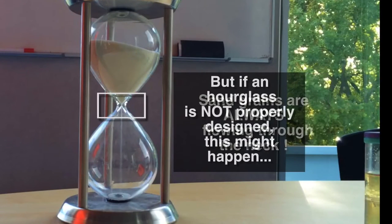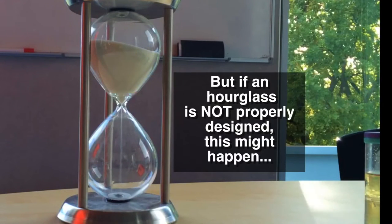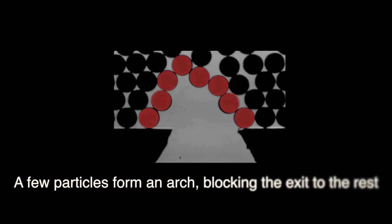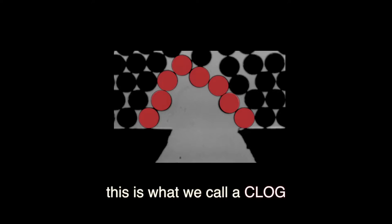But actually, sometimes hourglasses might not work correctly. Why's that? In this experiment, you can see what happens. At some point, several particles form an arc and they block the neck, preventing the other particles to get out. And this is called a clog, or an arc, or a jam, or a plug, or whatever you want to call it.